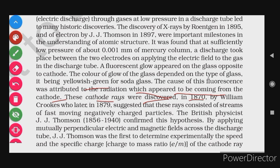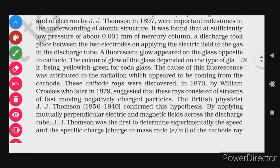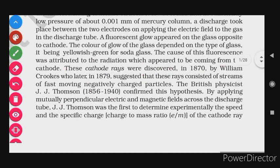Cathode rays were discovered in 1870 by William Crookes, who later in 1879 suggested that these rays consisted of streams of fast-moving negatively charged particles.